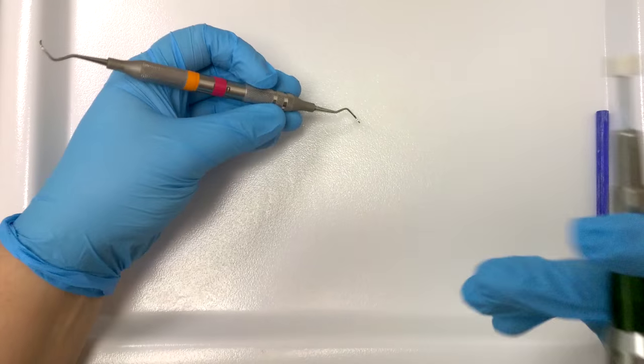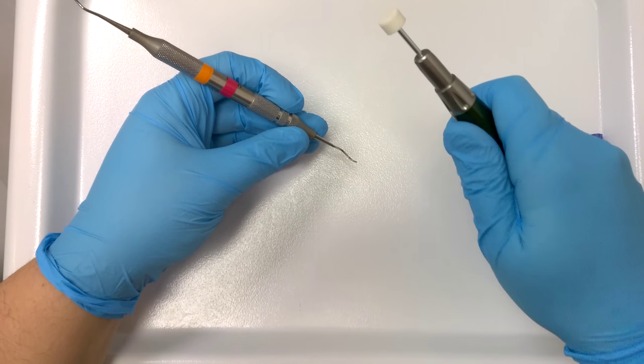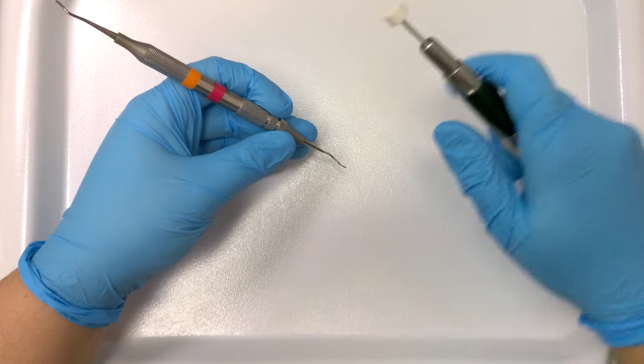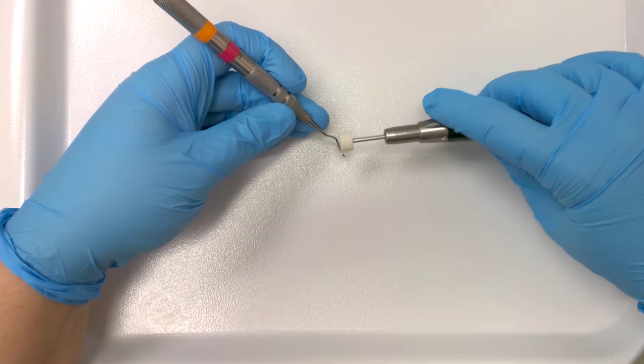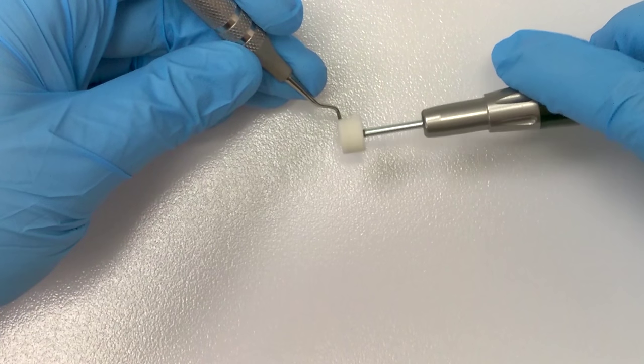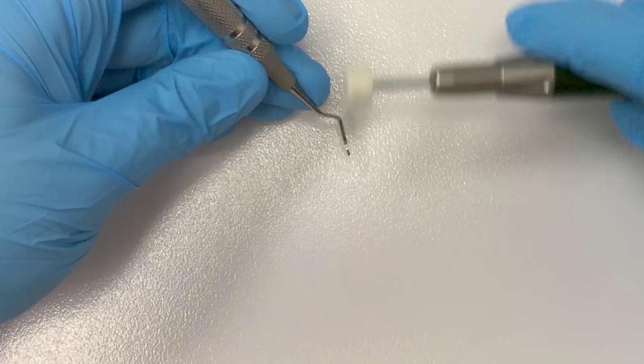So I'm going to hold the instrument in my non-dominant hand and I'm going to hold my handpiece in a grasp hold, low speed, the slowest you can. And you're just going to put pressure right on the face of your instrument.